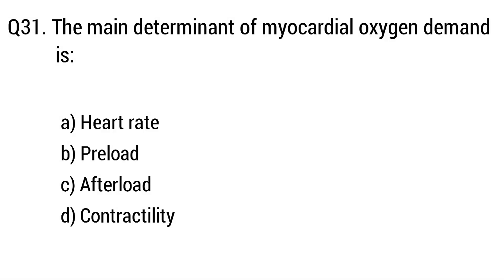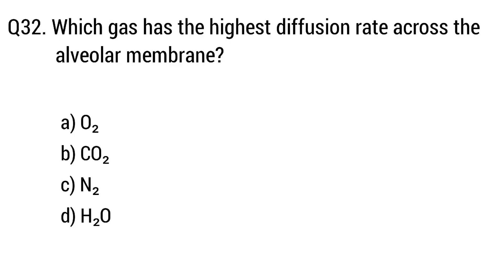Question 31. The main determinant of myocardial oxygen demand — the right answer is Option D: Contractility. Question 32. Which gas has the highest diffusion rate across the alveolar membrane? The right answer is Option B: CO2.